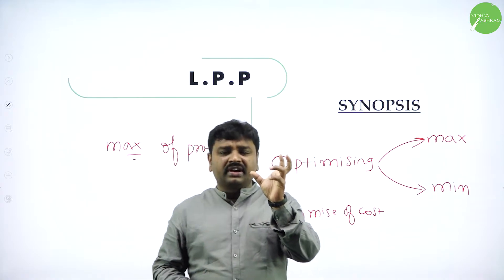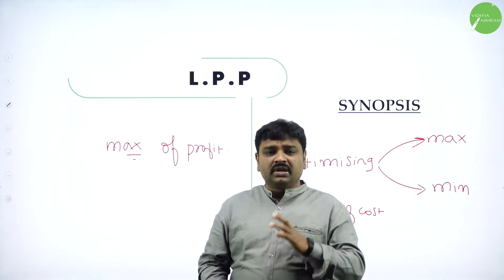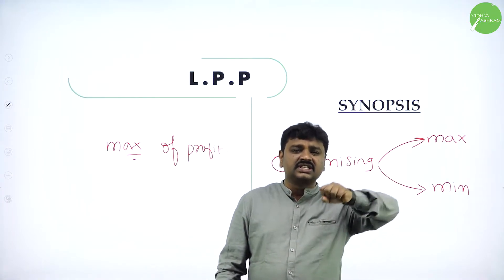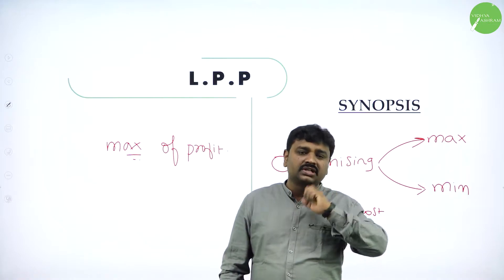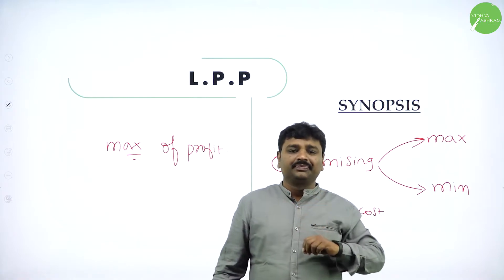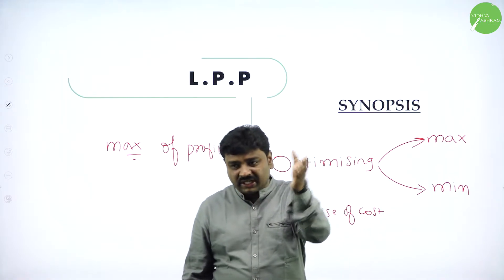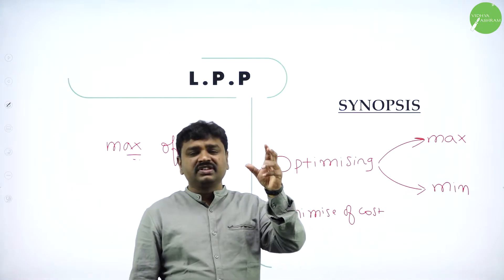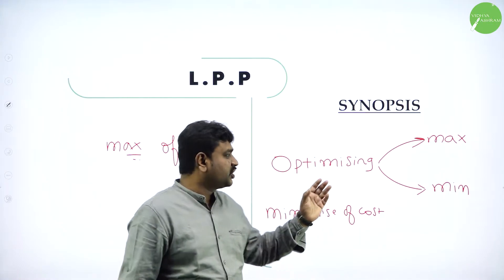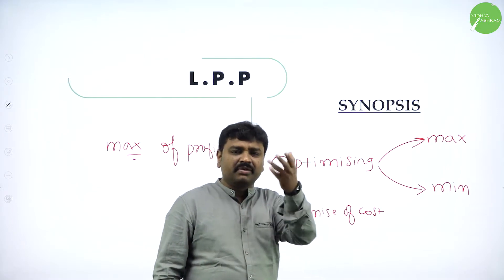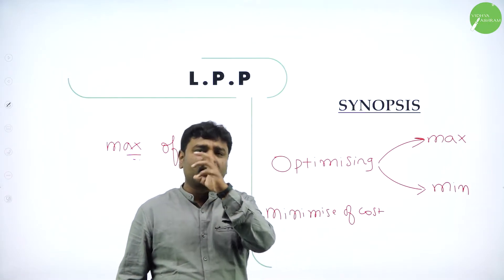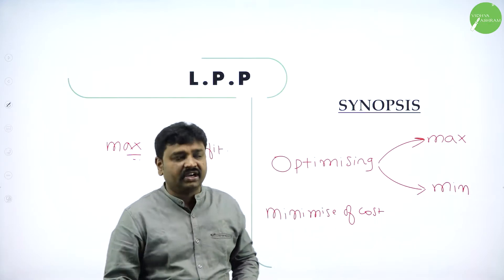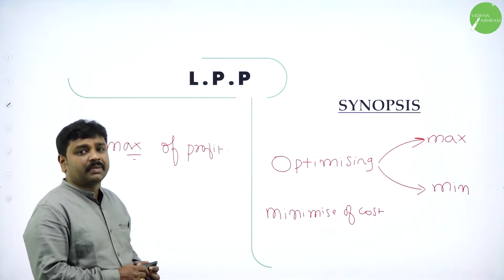Linear means we write degree-one equations and they give constraints. In many situations we'll have conditions, which we call constraints. Using constraints we create an inequality, and using the inequality we draw the graph. We solve the graph to get the feasible region or solution region, which gives you the optimal value — maybe minimum or maximum depending on the problem.